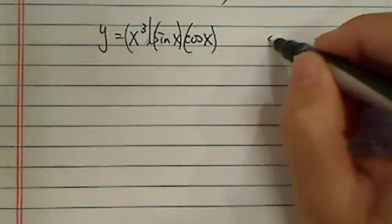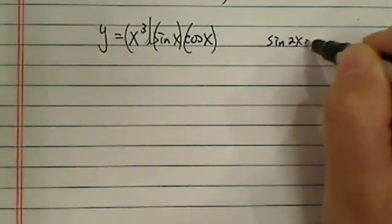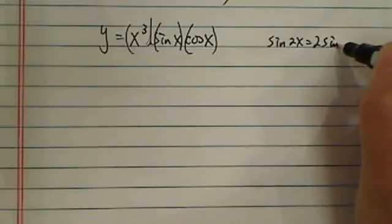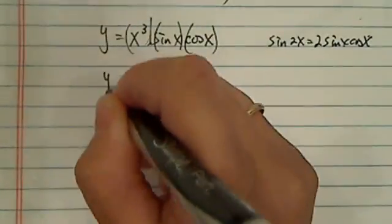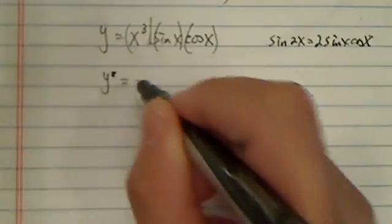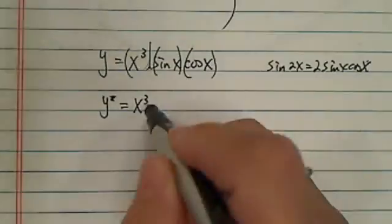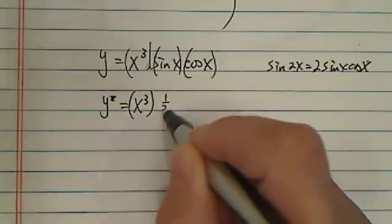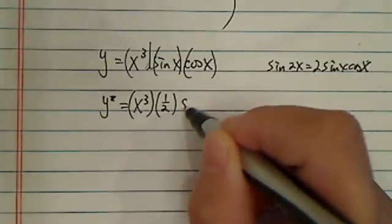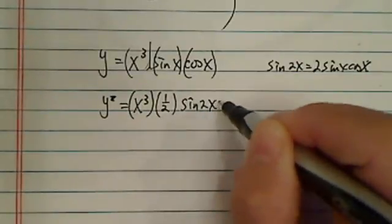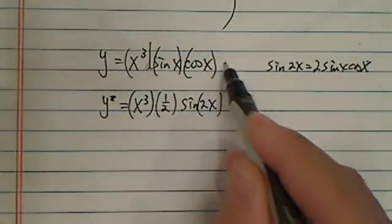Recognize that sin(2x) equals 2sin(x)cos(x). So what you can do is rewrite the function as y = x³ times (1/2)sin(2x), because we don't have the coefficient 2 here.